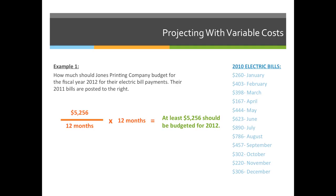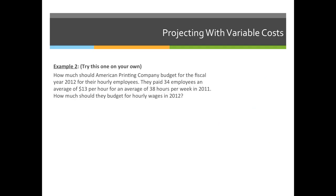If you're only given, say, 6 months of data, you'd do $5,256 divided by 6 months to get a monthly average, then multiply it by 12 months in the year. Now try number two on your own. How much should American Printing Company budget for the fiscal year 2012 for their hourly employees? They paid 34 employees an average of $13 per hour for an average of 38 hours per week in 2011. How much should they budget for hourly wages in 2012?